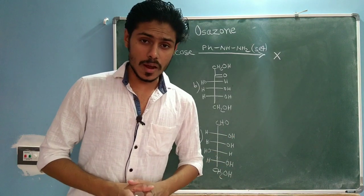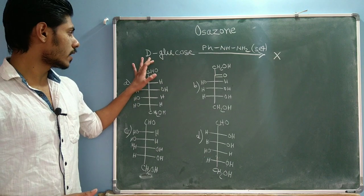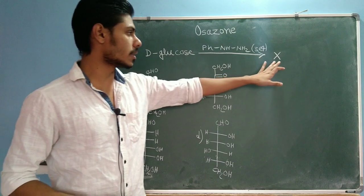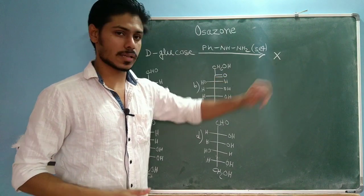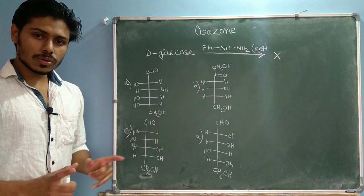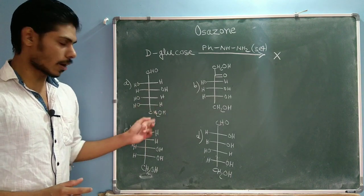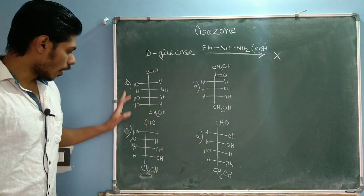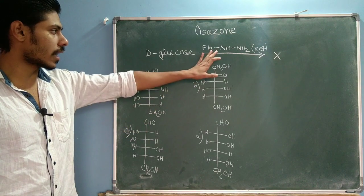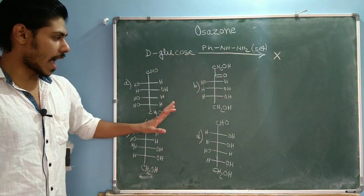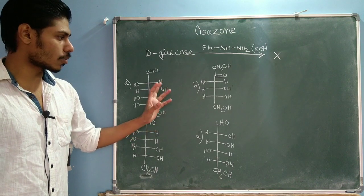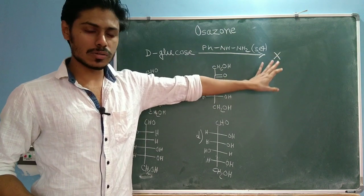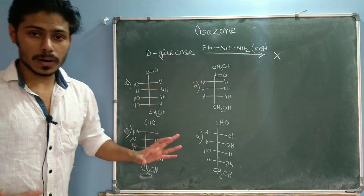The question is: D-glucose when treated with three equivalents of phenyl hydrazine gives some compound X. The question asks which of the following four compounds, when reacted with phenyl hydrazine, will give an osazone with the same melting point as X. So X is the osazone of D-glucose, and we need to identify which option matches it.